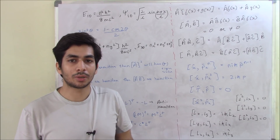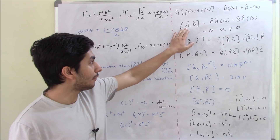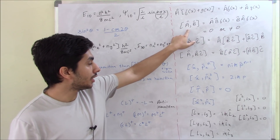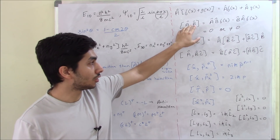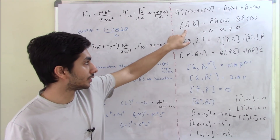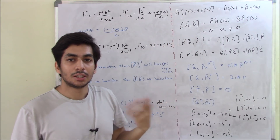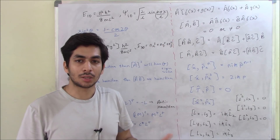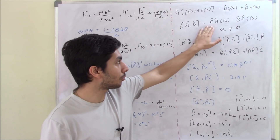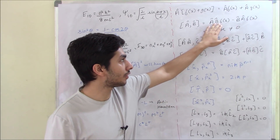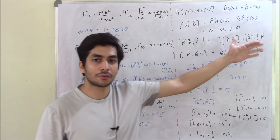Quantum mechanical operators must be linear. If you have square brackets with operator A and operator B, that means this is a commutator. A commutator is: operator A, operator B acting on f(x) minus operator B, operator A acting on f(x).